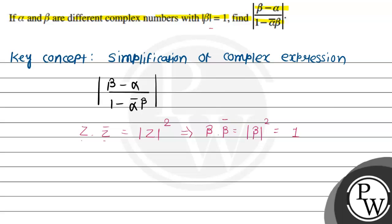We can use this note in our expression. Here, 1 can replace beta times beta bar. So that is equal to beta minus alpha divided by beta times beta bar minus alpha bar times beta.